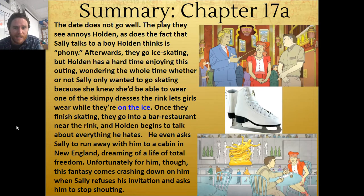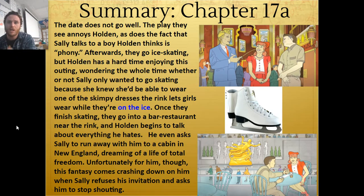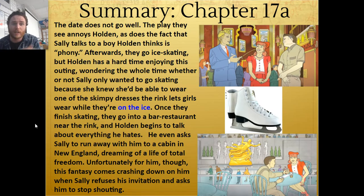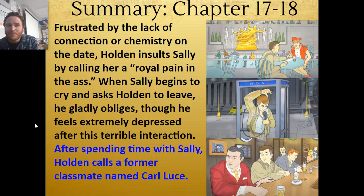Once they finish skating, they go into a bar restaurant near the rink and Holden begins to talk about everything he hates, ranting and raving. He even asks Sally to run away with him to a cabin in New England or Vermont or Massachusetts, dreaming of a life of total freedom. Unfortunately for him, this fantasy comes crashing down when Sally refuses his invitation and asks him to stop shouting. He says he isn't shouting at her. Frustrated by the lack of connection or chemistry on the date, Holden insults Sally — he calls her a royal pain in the you-know-what. When Sally begins to cry and asks Holden to leave, he gladly obliges, though he feels extremely depressed after this terrible interaction.